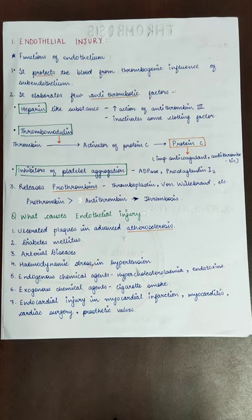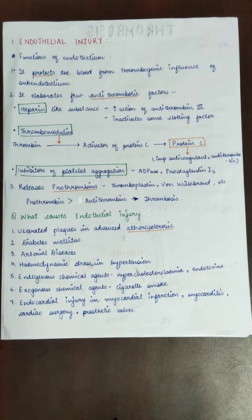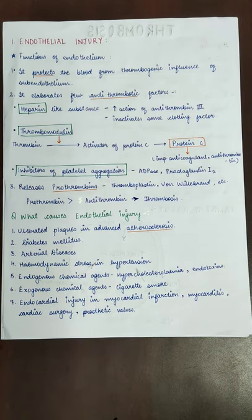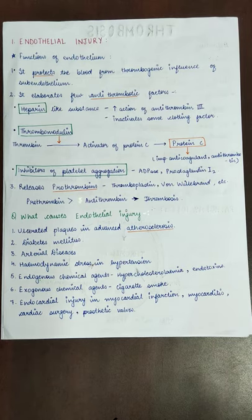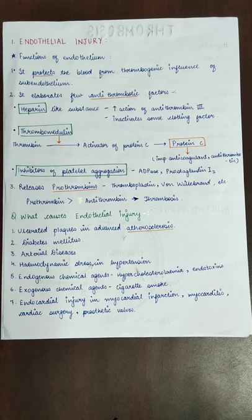Endothelial injury can occur for many reasons. First is atherosclerosis — increased cholesterol causes rupture of the endothelial lining, forming ulcers, which causes endothelial injury. Second is diabetes mellitus — hyperglycemia causes glucose to strike and rupture the endothelium. Third is arterial disease — if there is an artery disease, it can cause endothelial injury. Fourth is hypertension — increased blood pressure produces turbulence and fast blood flow that strikes the endothelium, causing injury.